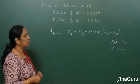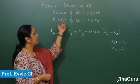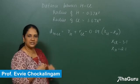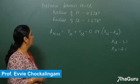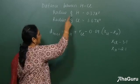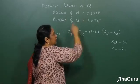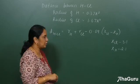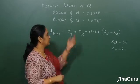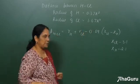In this problem, we have to calculate the distance between H and Cl in HCl molecule. The parameters given are: radius of hydrogen is 0.37 Angstrom and the radius of chlorine is 1.67 Angstrom.